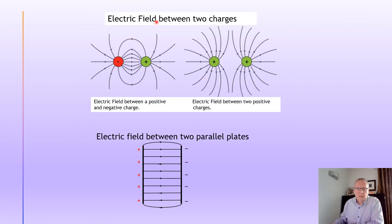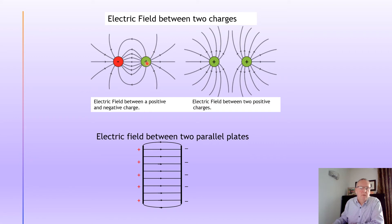Here are some more electric field patterns you need to be aware of. The first is between a positive and a negative charge — the arrows go away from the positive towards the negative. The second shows two positive charges, but the pattern would be the same for two negatives. If you place a positive charge in the region between two unlike charges, it would follow a loopy path to get to the negative. Between two like charges there's a repulsive force and the charge would move up and around. You just need to be aware of the shape of these patterns.